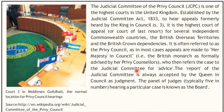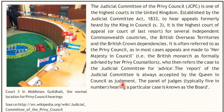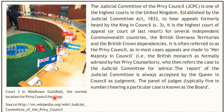The JCPC is often referred to as the Privy Council, as in most cases appeals are made to Her Majesty in Council — that is, the British monarch — as formally advised by her Privy Councillors, who refer the case to the Judicial Committee for advice. The report of the Judicial Committee is always accepted by the Queen in Council as judgment. The panel of judges, typically five in number, hearing a particular case is known as the Board. You can see Court 3 in the Middlesex Guildhall, the normal location of Privy Council hearings.